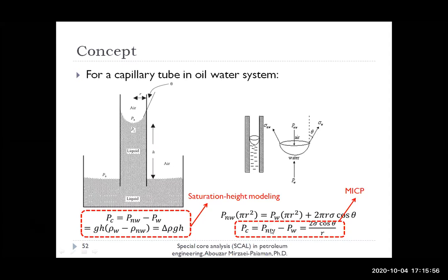Another important equation is the Washburn equation, which relates capillary pressure to interfacial tension of fluids, contact angle, and R — the pore radius. We use the Washburn equation to convert MICP (mercury injection capillary pressure) data to pore size radius and obtain pore size distribution of samples. This is very important in rock typing studies and is the fundamental equation we use.